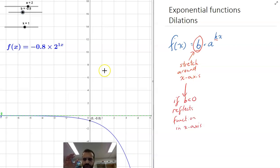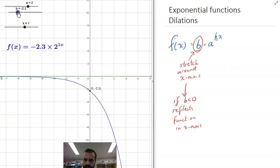So in a nutshell, b will stretch it around the x-axis. It'll stretch it up for large values of b, and it will reflect it in the x-axis for negative values of b. You can see there, nice. There you go.